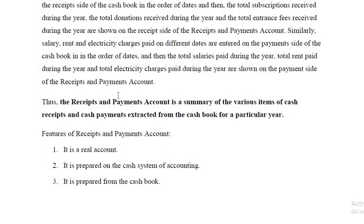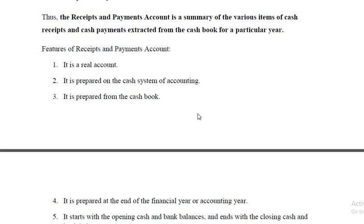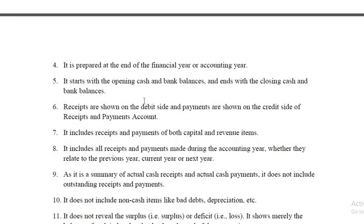The summary of cash receipts and cash payments is recorded in the receipts and payments account irrespective of whether the items are capital or revenue in nature, and whether they relate to the current year, next year, or previous year. Thus, the receipts and payments account is a summary of the various items of cash receipts and cash payments extracted from the cash book for a particular year. Now let us see some features: it is a real account — debit what comes in, credit what goes out. It is prepared on cash system of accounting; only cash transactions are recorded. Credit transactions are not recorded. It is prepared at the end of the financial year in the form of a summary.